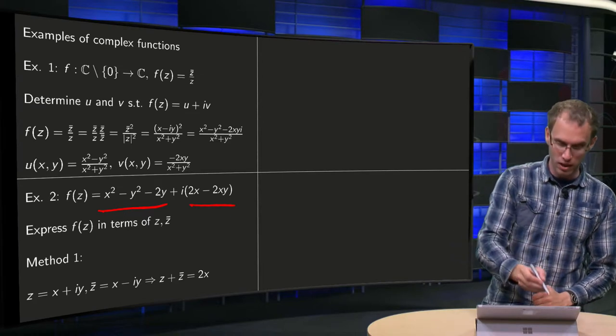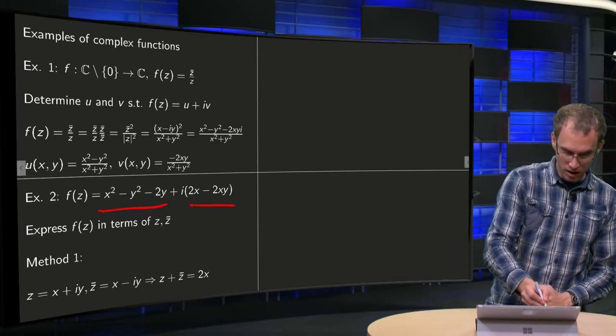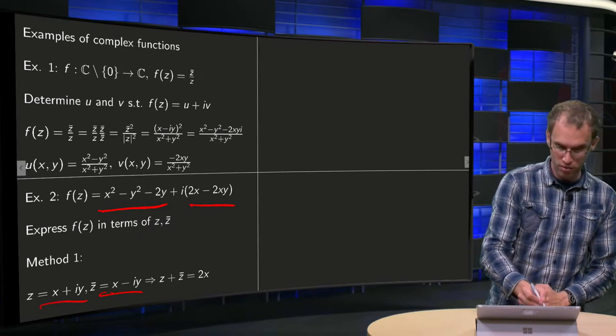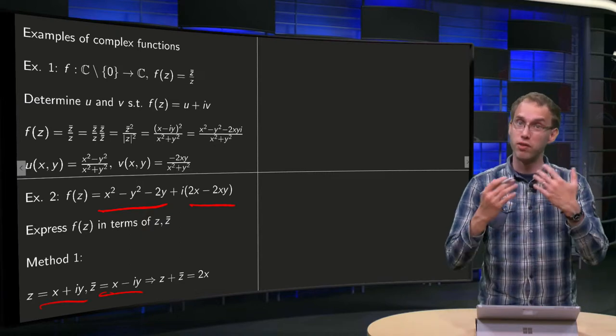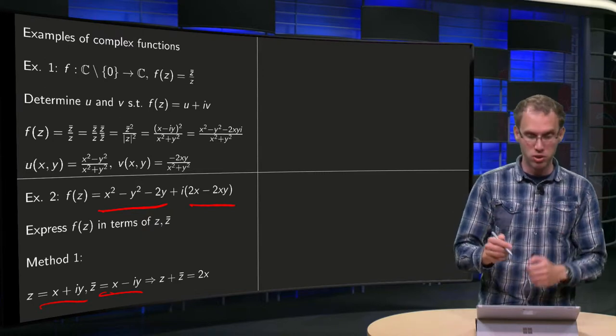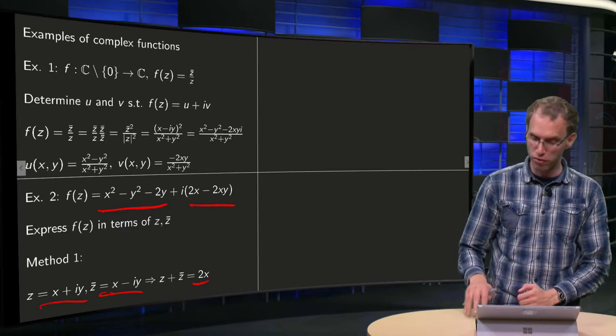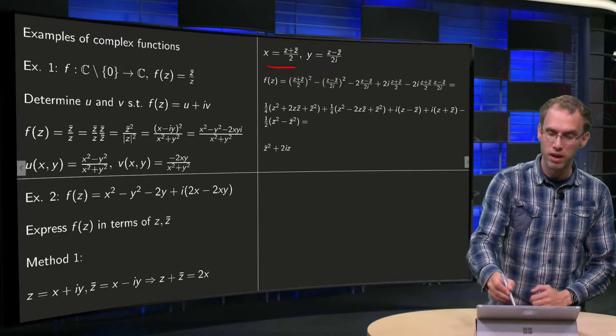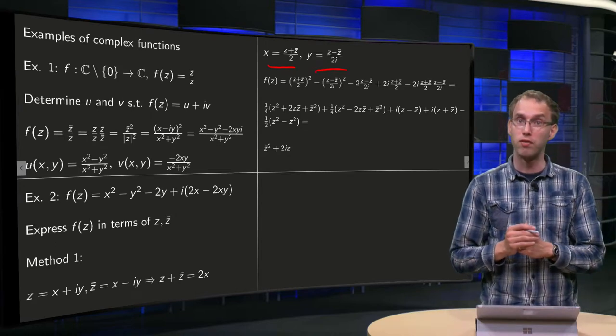So what you can do, you can express x in terms of z and z̄, because we know z equals x plus iy, z̄ equals x minus iy, so if you add them, you get z plus z̄, the iy's cancel out, and you get 2x, so we can solve for x, x equals (z + z̄)/2, and similarly for y, y equals (z - z̄)/(2i).